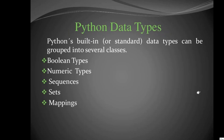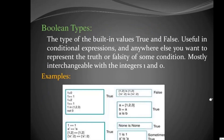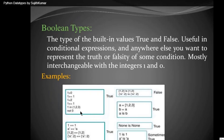Immutable means you cannot change. Mutable means you can change the value anytime. Boolean type is the type where you have true or false values. It gives a result of zero or one — one means true. For example, one is greater than zero is true; one is greater than or equal to one is also true; one is less than two is true.